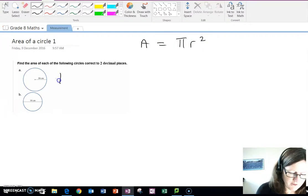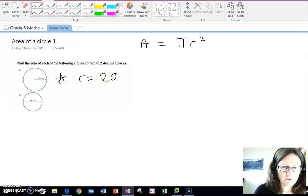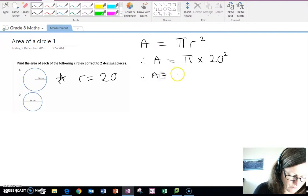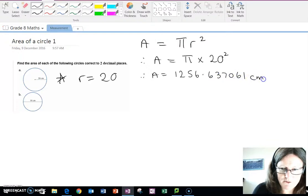So if we look at example A here, the radius is 20. So for this example, we write the formula, second step we substitute in, area equals pi times by 20 squared. If we put that into our calculator, so we go pi times by 20 squared, we will get the area being equal to 1256.637061 centimeters squared.